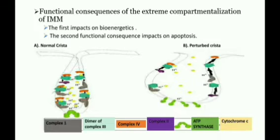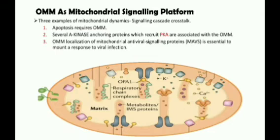Cristae are connected to the inner boundary membrane via cristae junctions. There are two main functional consequences of the extreme compartmentalization of the inner mitochondrial membrane. The first impacts bioenergetics: cristae organization ensures optimal conditions for ATP production, minimizing the diffusion of metabolites, protons, and ADP during respiration. The second functional consequence impacts apoptosis. The outer mitochondrial membrane hosts proteins fundamental for organelle physiology and is crucial for mitochondrial dynamics, as it hosts all the molecules involved in mitochondrial fusion and fission.